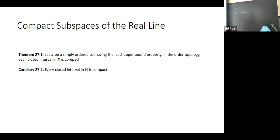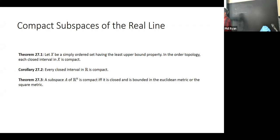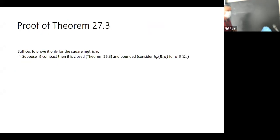This means in particular that every closed interval in ℝ is compact, because ℝ has the least upper bound property. What about ℝⁿ? The theorem is: a subspace of ℝⁿ is compact if and only if it is closed and bounded in the Euclidean metric or the square metric.